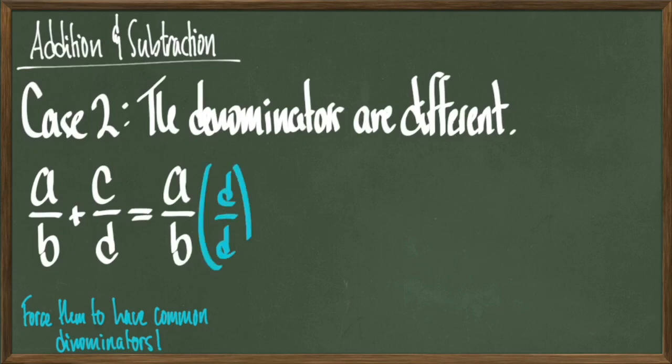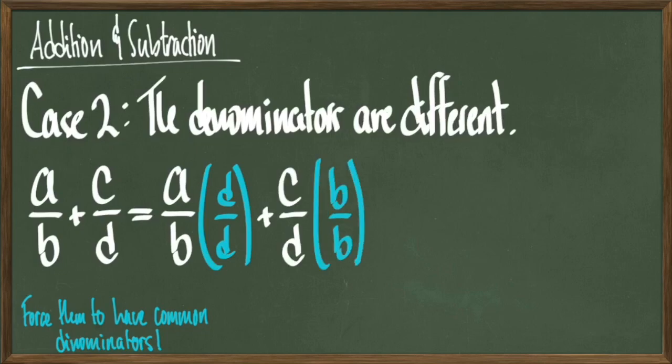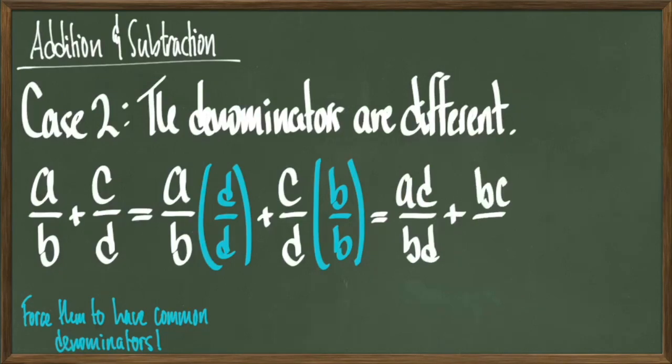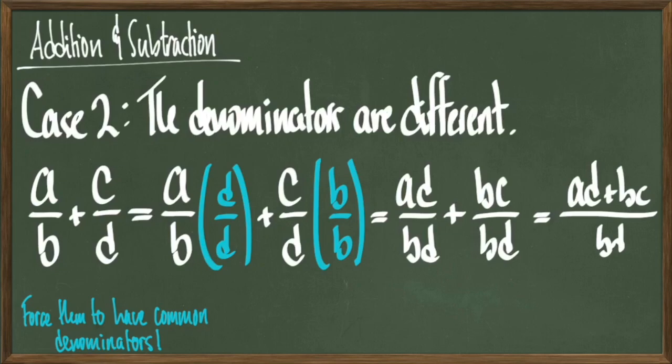So, I'm going to take a over b and multiply it by d over d, the denominator from the fraction on the right. I'm also going to multiply c over d by b over b, the denominator from the fraction on the left. Again, since d over d and b over b are both equal to 1, I haven't changed the value of either of my fractions. But, once I start multiplying, I'm going to change the way these fractions look. Multiplying across in each product gives me ad over bd plus bc over bd.